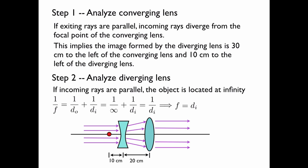We just said that the image is located 10 centimeters to the left of the diverging lens. So the distance to the image must be negative 10 centimeters, which is also the focal length of the diverging lens. It's negative as we expect because the focal length of a diverging lens is always negative.